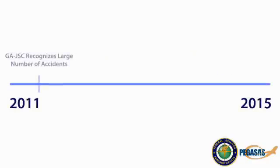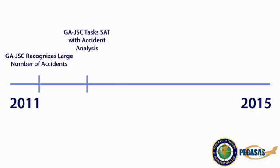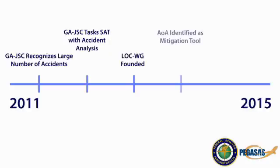In 2011, the General Aviation Joint Steering Committee, or GAJSC, recognized the need to address loss of control accidents and started researching ways to mitigate these events. They tasked the Safety Analysis Team with the analysis of accidents that were caused by loss of control. Following the Safety Analysis Team's findings, the Loss of Control Working Group was founded to research and make recommendations for potential solutions. The Loss of Control Working Group determined that angle of attack displays could be a useful mitigation strategy for general aviation aircraft.